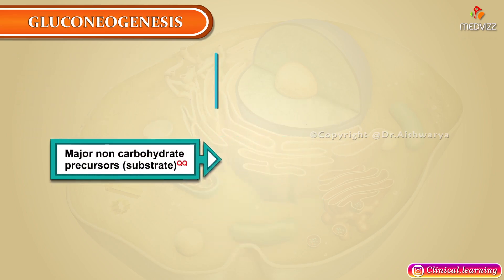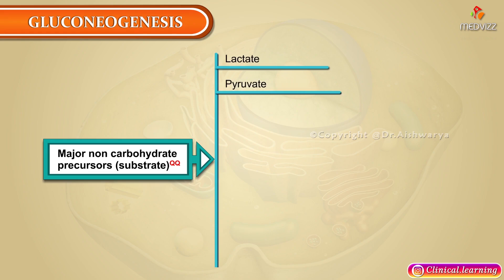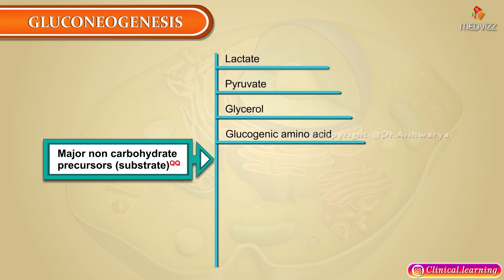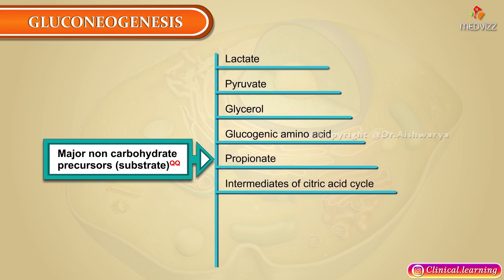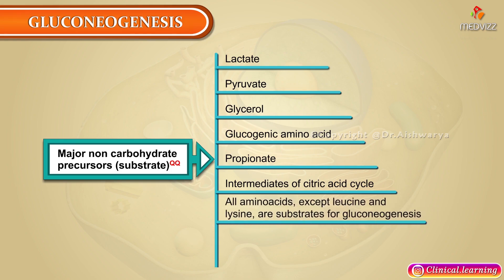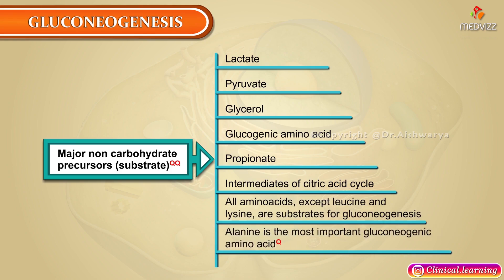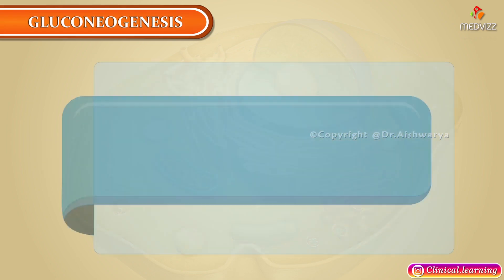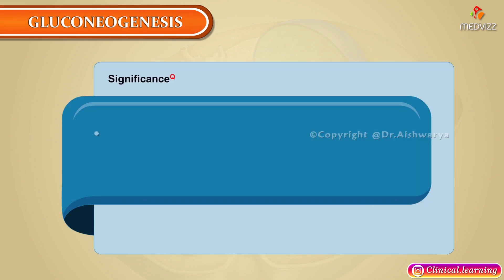The major non-carbohydrate precursors or substrates are: lactate, pyruvate, glycerol, glucogenic amino acids, propionate, and intermediates of the citric acid cycle. All amino acids except leucine and lysine are substrates for gluconeogenesis.